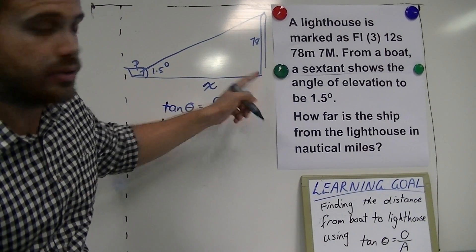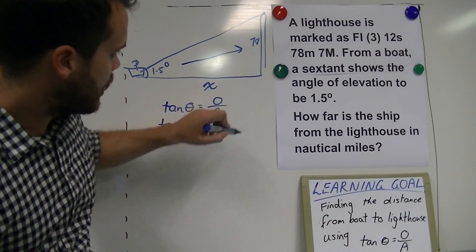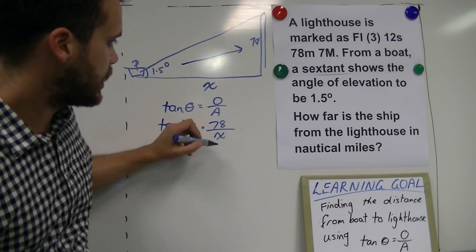Opposite, it's that length, the one opposite the angle, so that's going to be 78. And the adjacent, that's x.